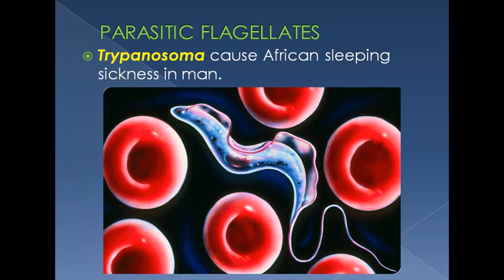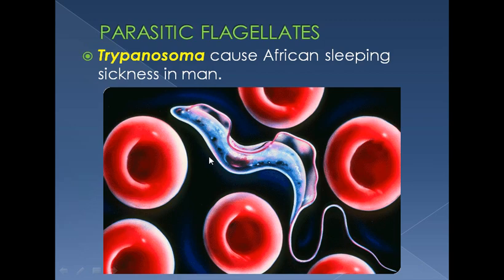Parasitic flagellates include Trypanosoma, which causes African sleeping sickness in humans. The flagellum arises from the interior side of the organism and forms a membrane-like structure called an undulating membrane. This membrane along with the flagellum helps in motility. The nucleus is visible, and the organism is found in blood circulation and the nervous system.